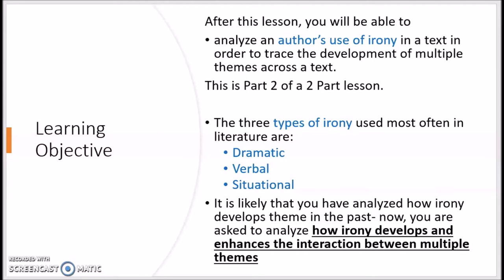In part one, you really explored the types of irony and how to differentiate what irony is from what irony is not. As you know from previous lessons, there are three types of irony used most often in literature: dramatic irony, where the audience knows information that the characters are not aware of; verbal irony, where what is said is different from what is meant; and situational irony, where there is a difference between what the audience expects and what actually occurs.